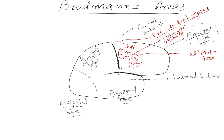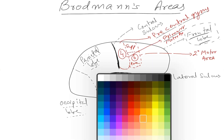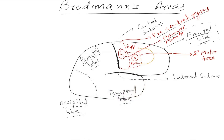Anterior to the secondary motor area there is another area — area number 8, also known as the frontal eye field area. This is a very important area for controlling the horizontal movement of the eyes and horizontal vision.